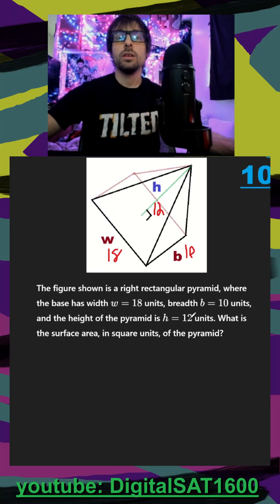And they want to know the surface area. We can start with the easy side, and that is the base or bottom of the pyramid, and that's just going to be our width of 18 times our base of 10, and we're going to get 180 for that.